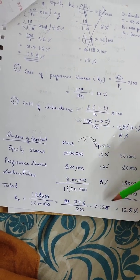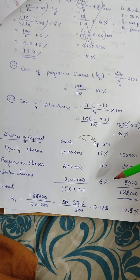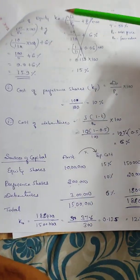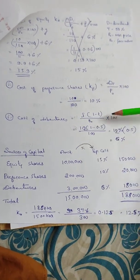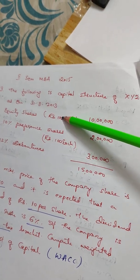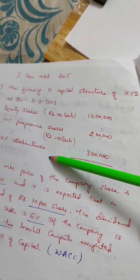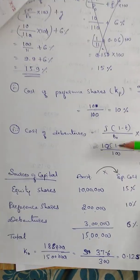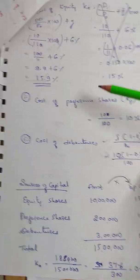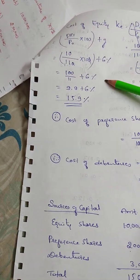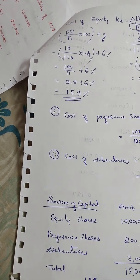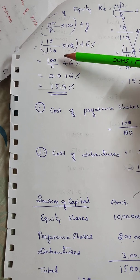Friends, one point of clarification: P0 is taken as Rs. 100 each for equity shares, preference shares, and debentures. We use book value here. The market price of capital formula is applied, dividing by 100 to compute the cost percentages.